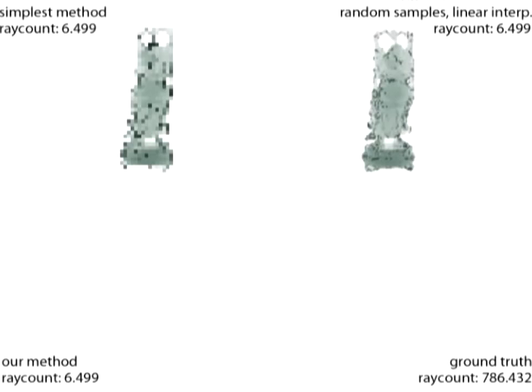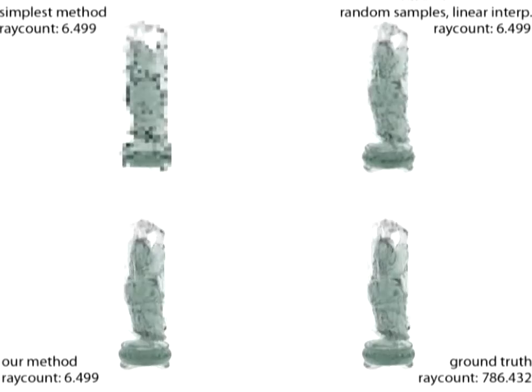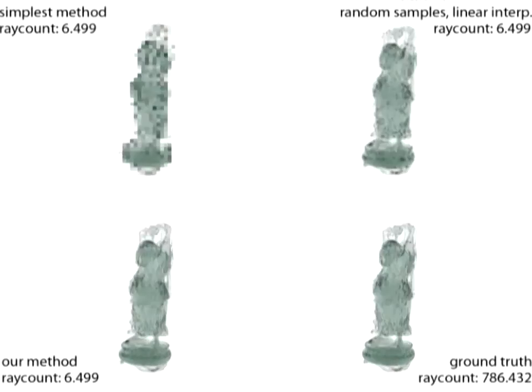This example shows the comparison of image quality of a simple ray reduction method, a better adaptive method, our method, and the ground truth. Our method produces a higher quality image using the same ray count as other methods. In this case, it is less than 1% of the ground truth.